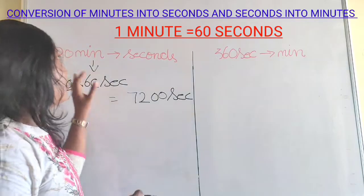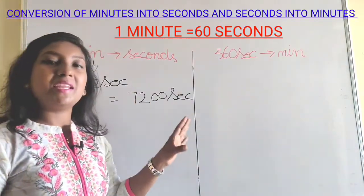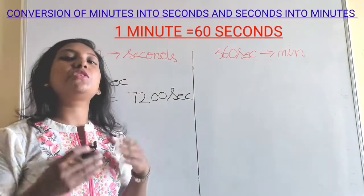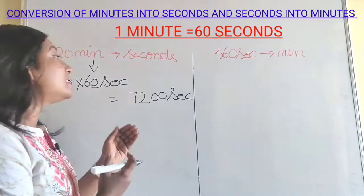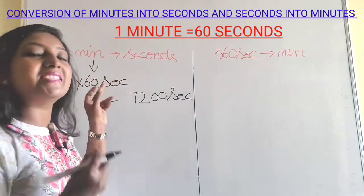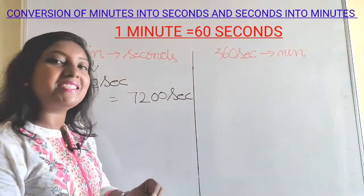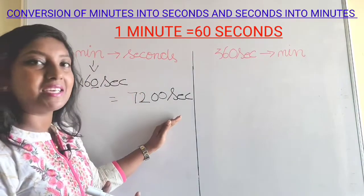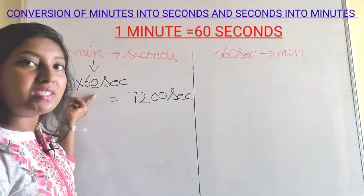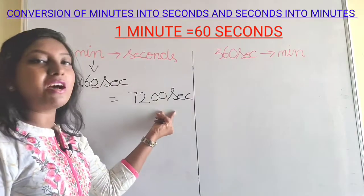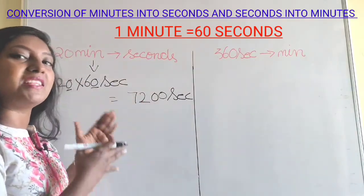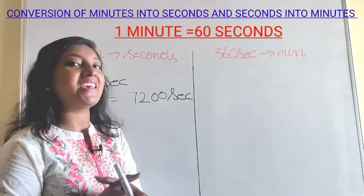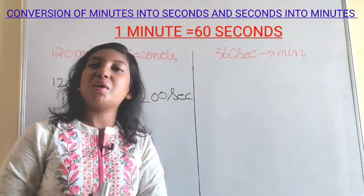So what have we done here? We took 120 minutes, and using the fact that 1 minute equals 60 seconds, we substituted 60 seconds in place of minutes and multiplied by 120. We brought down the 2 zeros and multiplied 12 by 6 to get 72, giving us 7200 seconds.